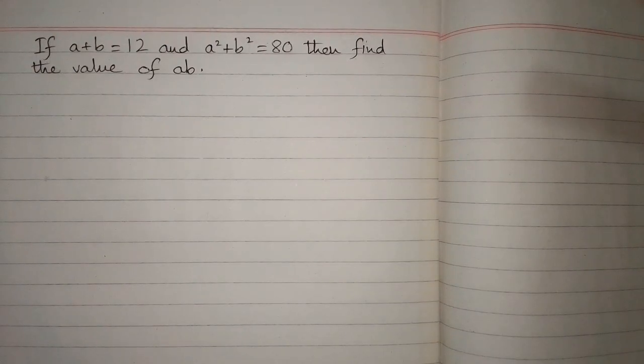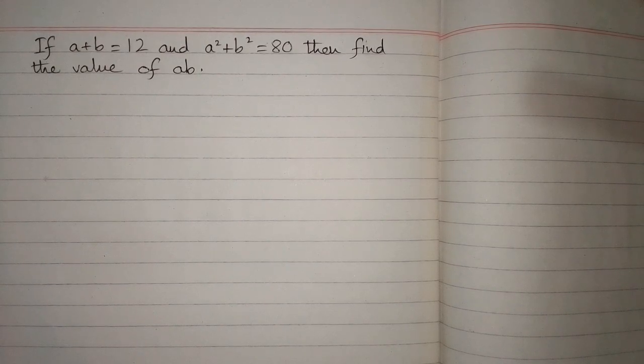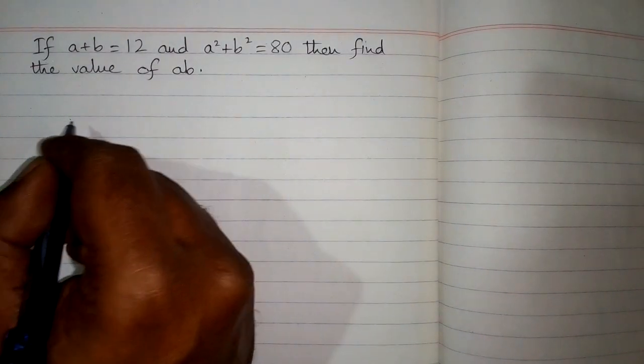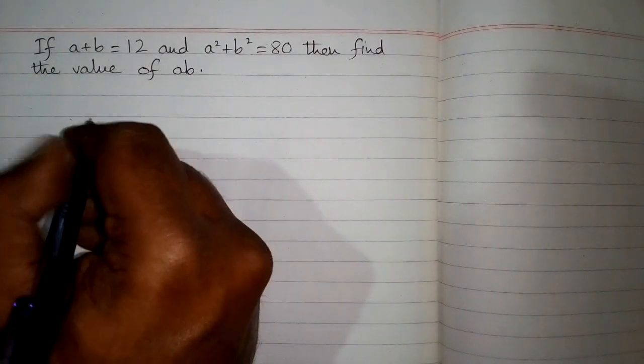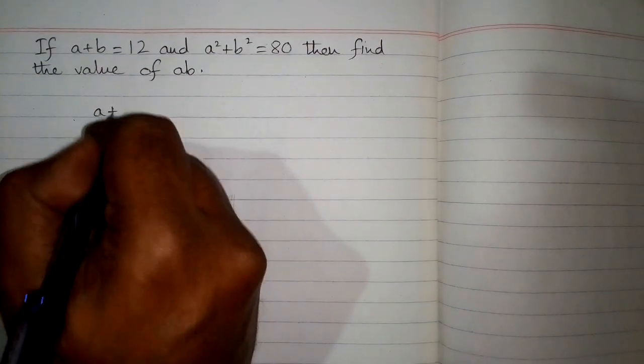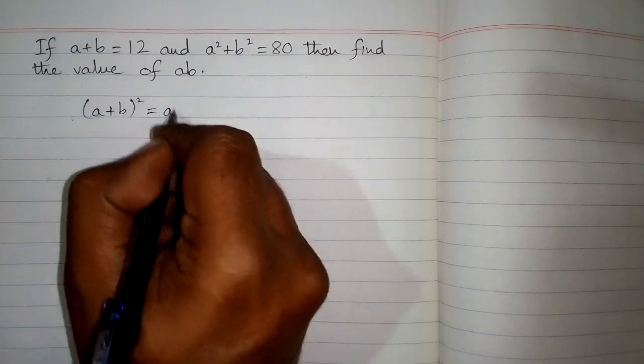If a + b = 12 and a² + b² = 80, then find the value of ab. We can use the algebraic identity (a + b)² equals